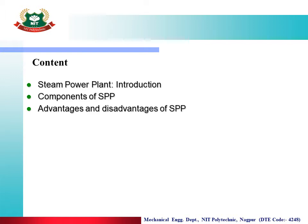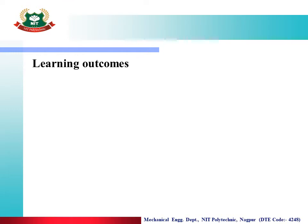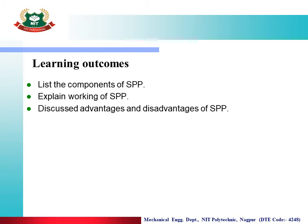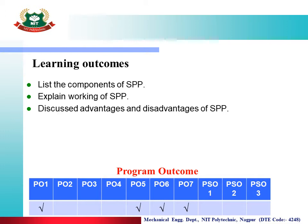Learning outcomes: after completion of this lecture, you will be able to list the components of a steam power plant (SPP), explain the working of a steam power plant, and discuss its advantages and disadvantages. A steam power plant is also called a thermal power plant. Program outcomes PO1 to PO7 and PSO1 to PSO3 are mapped by this video lecture.